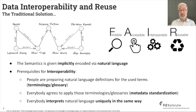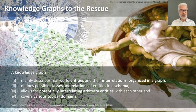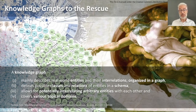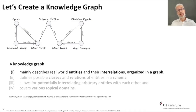So the traditional solution has its flaws because everything depends on natural language. This is where knowledge graphs come to the rescue. One concise definition by my colleague Heiko Paulheim states: a knowledge graph mainly describes real-world entities and their interrelations, organized in a graph. It defines possible classes and relations of entities within a schema, allows for inter-relating arbitrary entities with each other, and can cover a variety of topical domains.